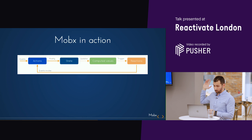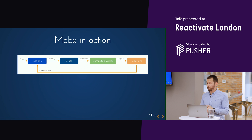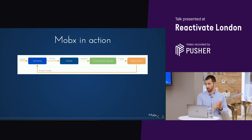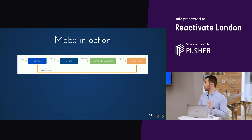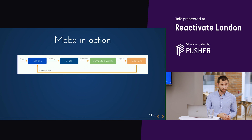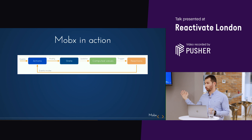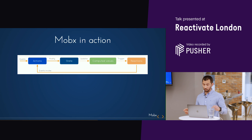This is the flow that MobX follows. An event in the UI triggers an action. The action changes the state. Because of the reactive approach, all computed values automatically update since they are listening to the state, and they then notify whatever observers are watching them. The observers react to that change and update the UI. The arrows show the difference: from action to state is something the user triggers; whatever happens next is just reacting to the state change.